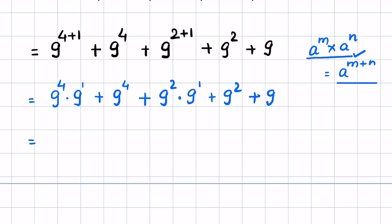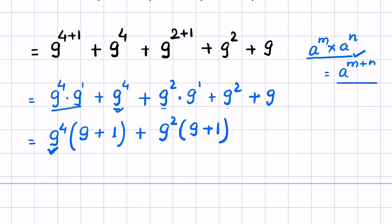Now we can take 9 raised to the power of 4 as common. So 9⁴ times (9¹ + 1), and then plus 9² times (9¹ + 1), plus 9. Here again you can take 9 raised to the power of 2 as common.